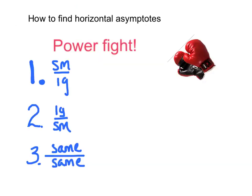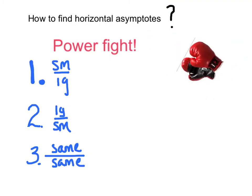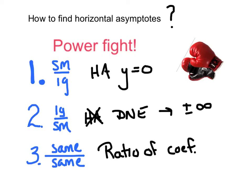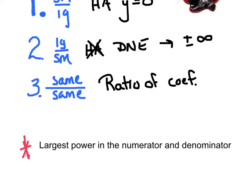So the point is that when x approaches infinity, you've created horizontal asymptotes. This begs the question: how do you find horizontal asymptotes? It's real simple — we're going to use what we call the power fight. There are three rules. The first one is small over large, and that gives us a horizontal asymptote of y equals zero. Large over small gives us a horizontal asymptote that does not exist.